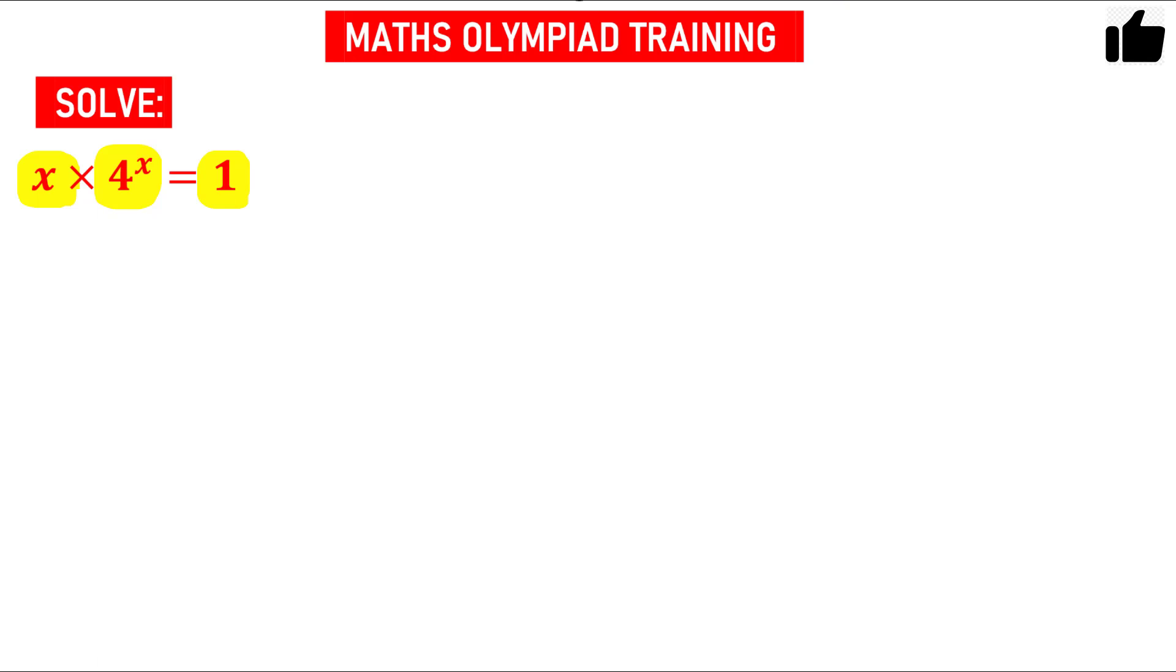So let us first divide both sides by x. So you have x times 4 raised to the power x equals 1. If I divide by x on this side and this side also, on the left hand side I will have 4 raised to the power x and on the right hand side 1 by x.